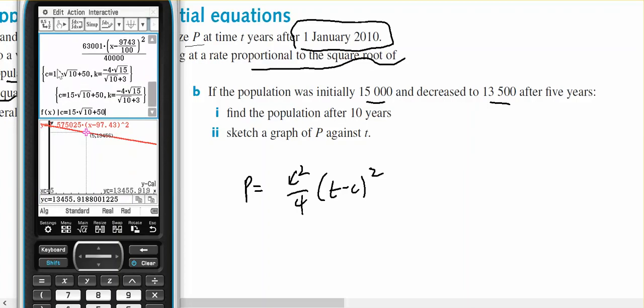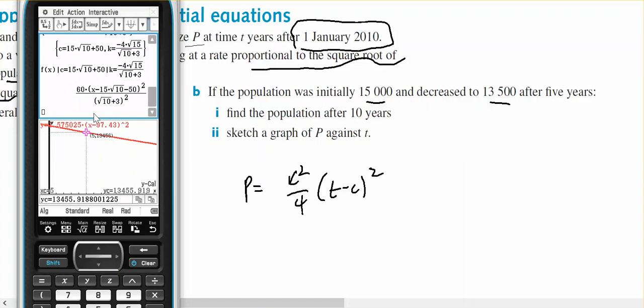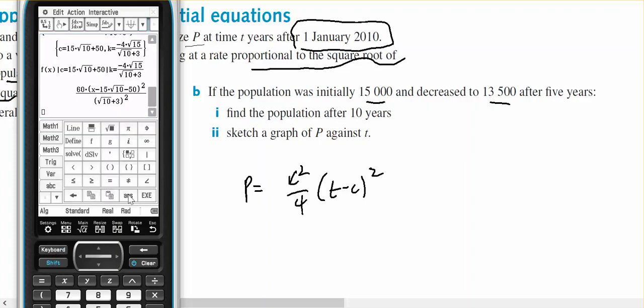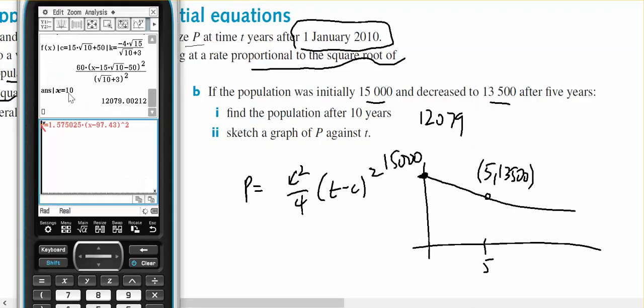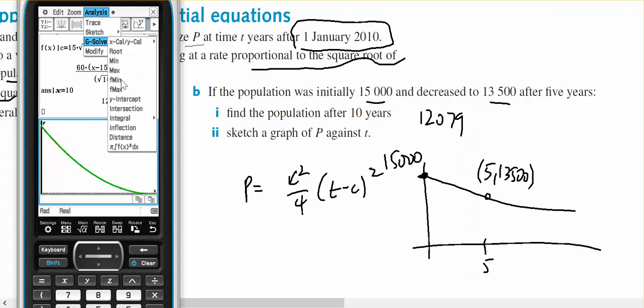So I'm interested in that given x equals 10. And the green curve is the curve I want. Analysis g solve, minimum for the green one.